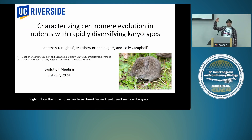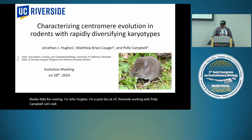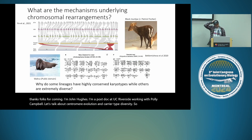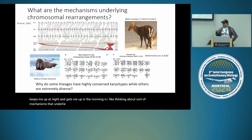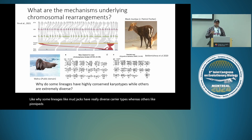Thanks for coming. I'm John Hughes, a postdoc at UC Riverside working with Polly Campbell. Let's talk about centromere evolution and karyotype diversity. What keeps me up at night and gets me up in the morning is thinking about mechanisms that underlie chromosomal rearrangements — and particularly why some lineages like muntjacs have really diverse karyotypes, whereas others like pinnipeds have very conserved karyotypes even across long periods of time.